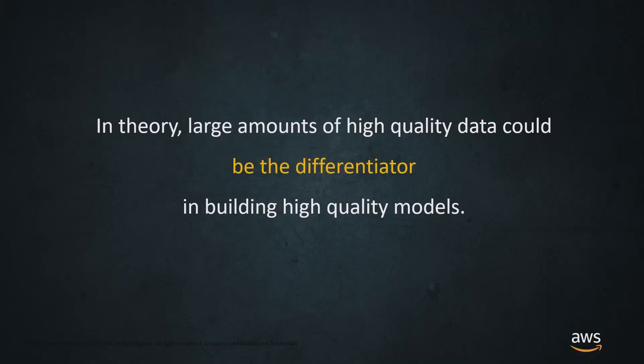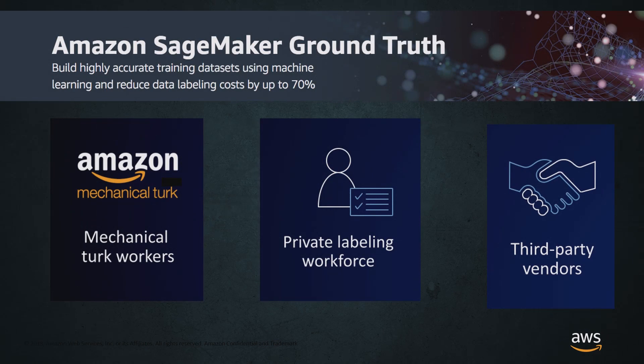There are tons of ideas out there, and those ideas are awesome. We want to build models that can do everything under the sun. But in reality, we need labeled data in order to get that done — and not just a small amount. We need a lot. Having a lot of high-quality data could actually be the differentiator in helping us build high-quality models. And so to support high-quality models around the world, we have Amazon SageMaker Ground Truth.